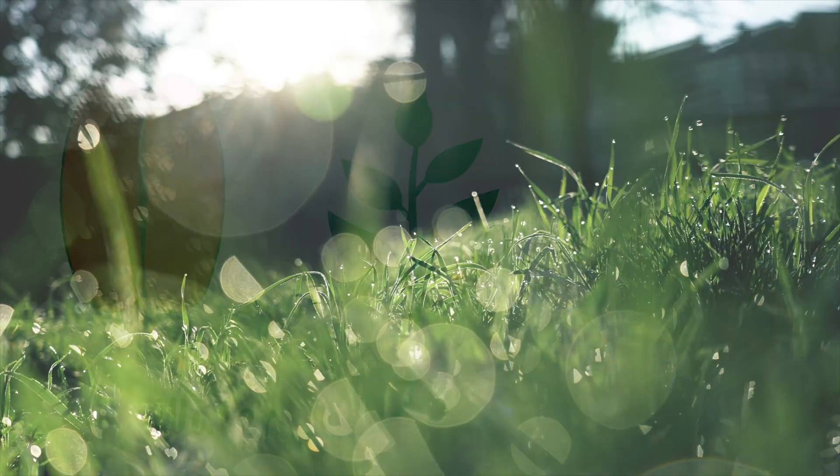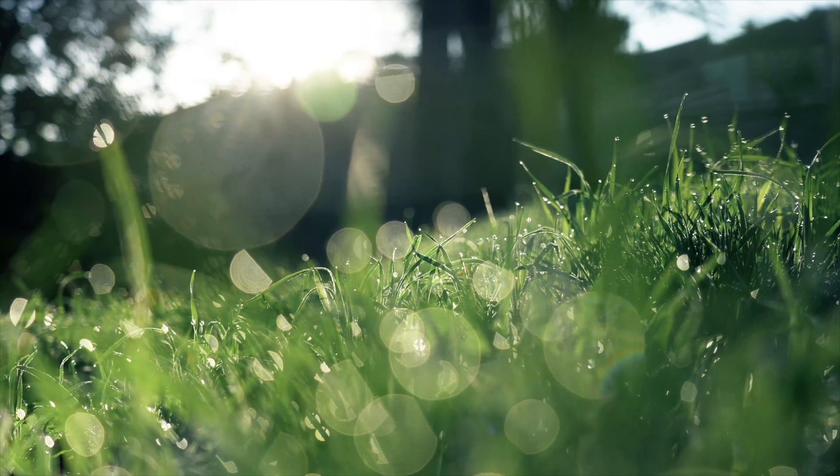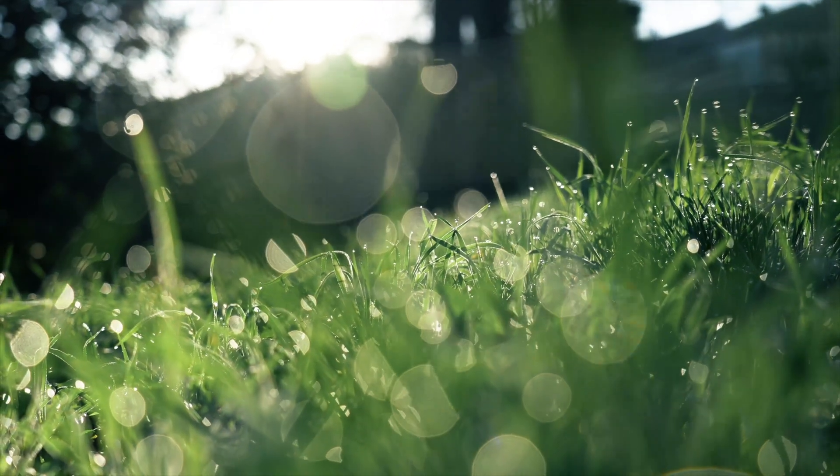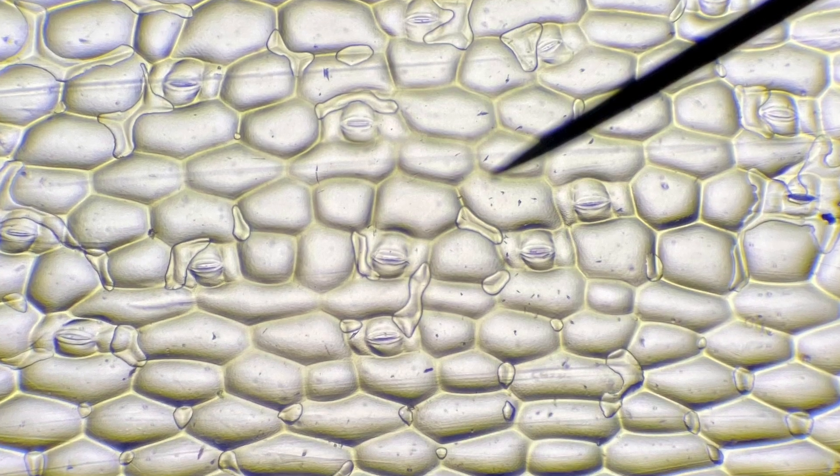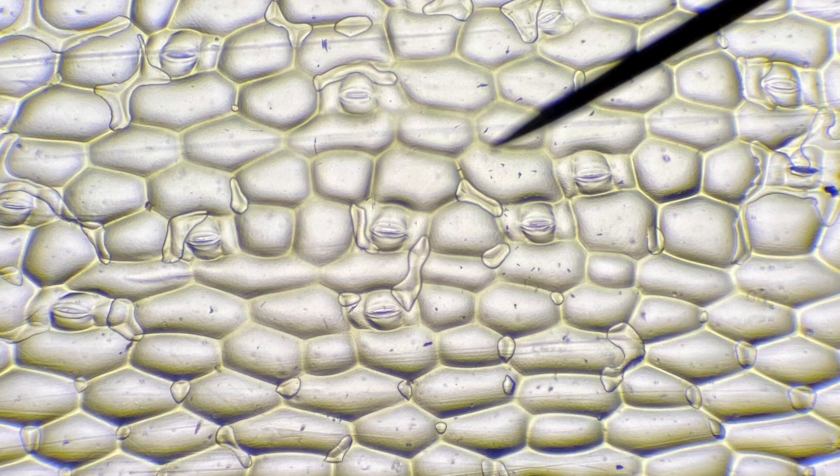So basically, the environmental conditions, such as an abundance or lack of water, mean plants need a mechanism to allow or prevent gas exchange. It's these weird little mouth structures that make it happen. Nature is awesome.